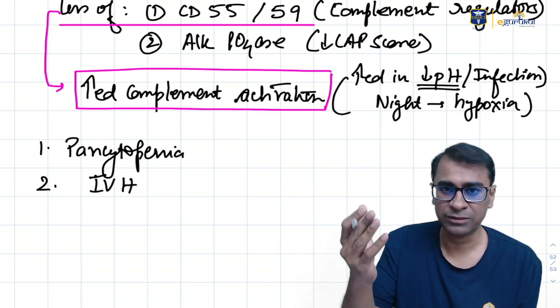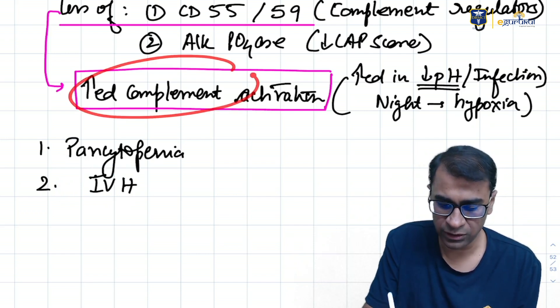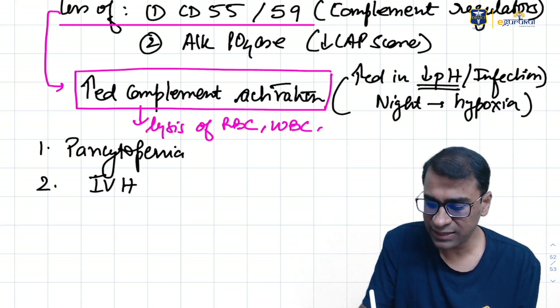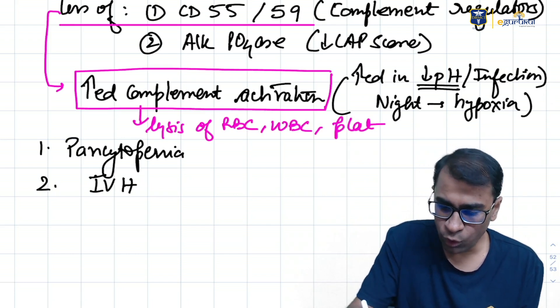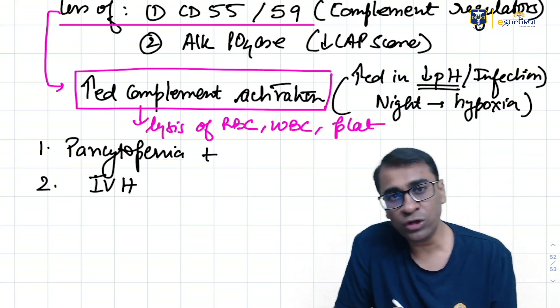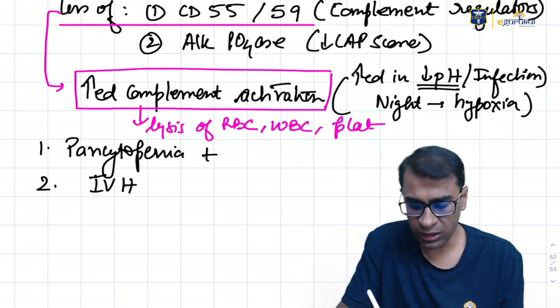Pancytopenia happens because of huge complement activation. It will cause lysis of RBCs, white blood cells, and platelets. Because of all of them getting lysed, there is pancytopenia. But the bone marrow starts proliferating more and has hypercellular bone marrow.